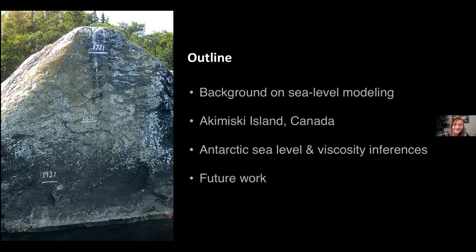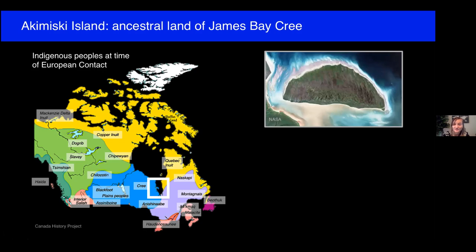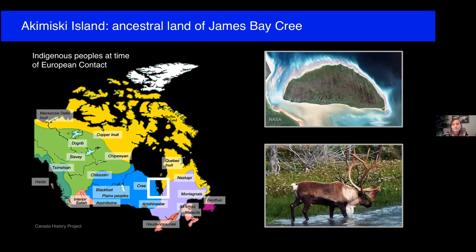Let's get into our first case study: Akamiskie Island, Canada. The map of Canada shows the rough range for tribal lands at the time of European contact. You can see the Cree in blue near Hudson Bay and James Bay. This case study focuses on Akamiskie Island — the largest island in James Bay. I'm Texan, so I note it's delightfully taco shaped. It has a boreal forest setting and it is the ancestral land of the James Bay Cree.